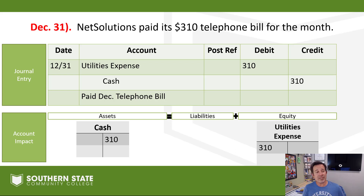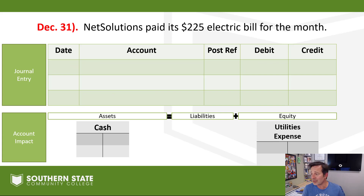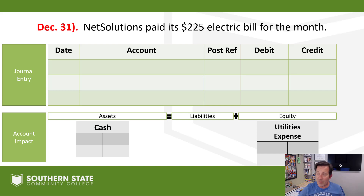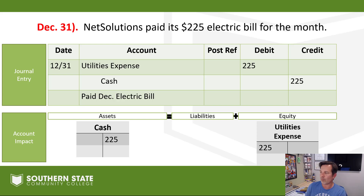The very next entry is for the electric bill for the month — exact same idea: utilities expense and cash. We literally just did that exact entry, just a different amount. We're talking $225 for the electric bill for the month of December.